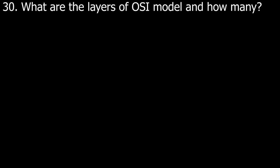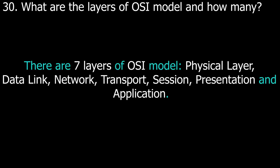Question number thirty: what are the layers of the OSI model and how many are there? There are seven layers of the OSI model: physical layer, data link layer, network layer, transport layer, session layer, presentation layer, and application layer.